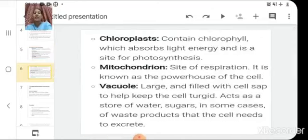Then chloroplasts contain chlorophyll pigment in them which absorbs light energy and it is a site for photosynthesis process. Then mitochondrion which is a site of respiration, cellular respiration in cell. It is known as the powerhouse of the cell. Then vacuoles, these are large and filled with cell sap to help keep the cell turgid, act as a store of water, sugars, and in some cases of waste products that the cell needs to excrete out.